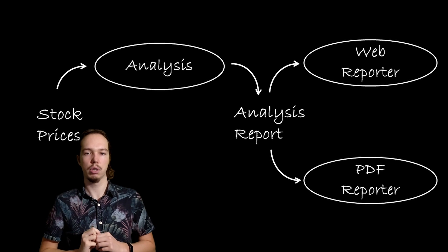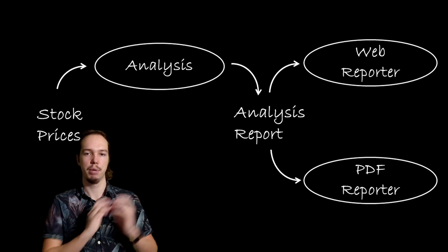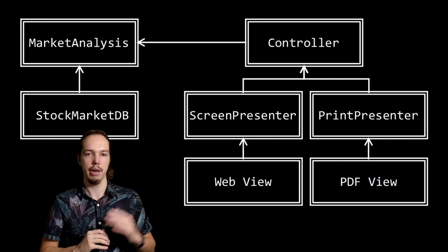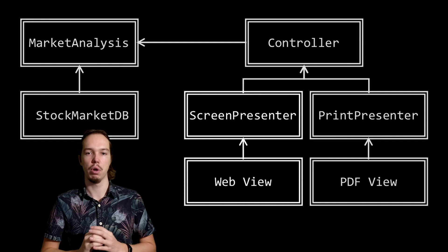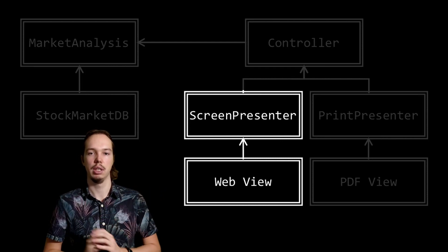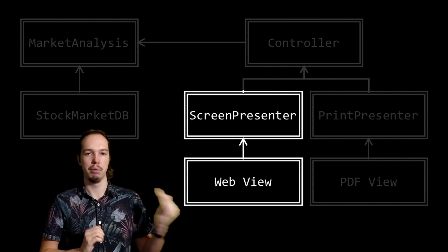The key insight is that generating the report involves two separate responsibilities: the calculation of the reported data, and the presentation of the data in a PDF or web-friendly format. We can abstract from individual classes and instead look at a high-level component diagram. Here, an arrow between two components shows a code dependency — if component A has an arrow pointing towards component B, there's at least some class in A that mentions the name of a class in B. For example, the WebView component depends on the ScreenPresenter component.